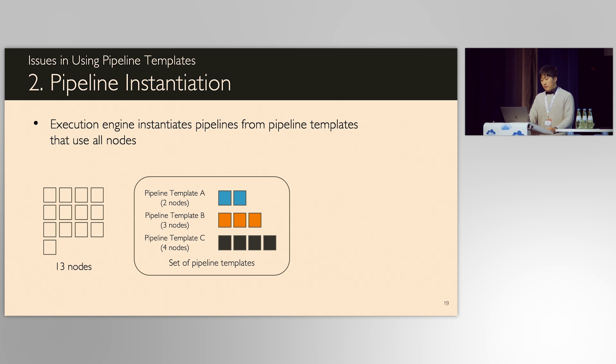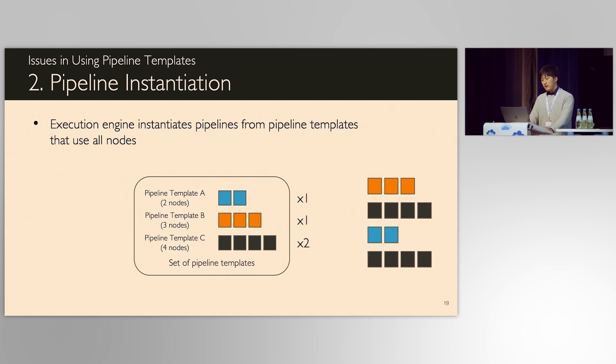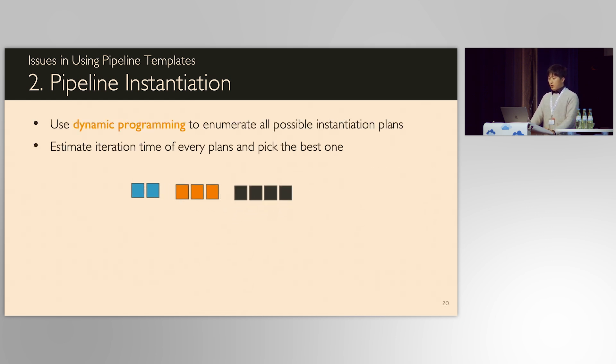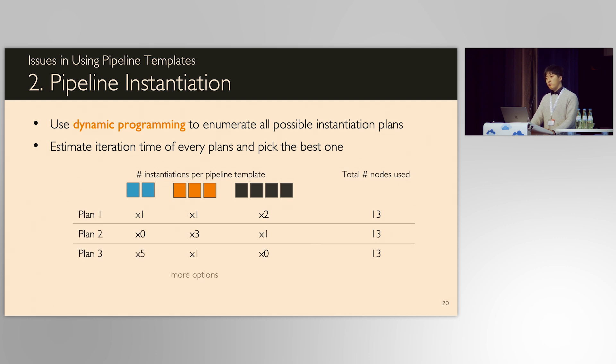After generating pipeline templates, pipelines are instantiated from them. From the same example we used, the 13 nodes can be used to create four pipelines as in the right side of the screen. However, this execution plan is not a unique example, and there might be more plans with the same set of pipeline templates and same number of nodes. We used dynamic programming to enumerate all possible plans, and for every possible plan, we estimate iteration time and pick the fastest one.